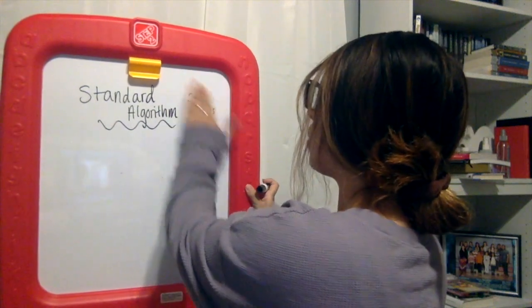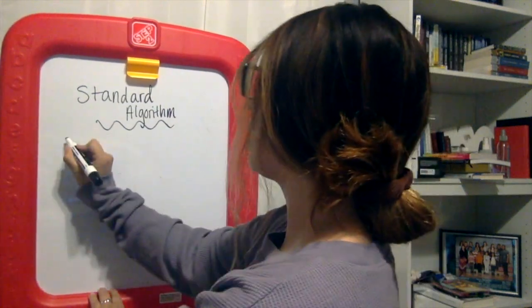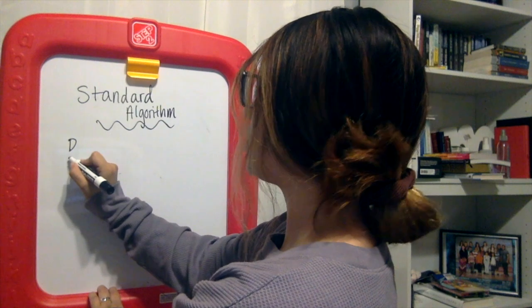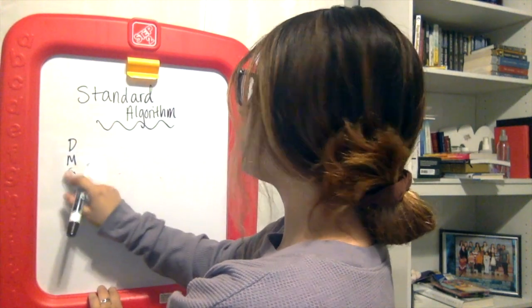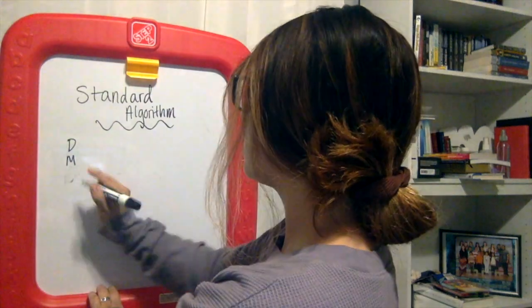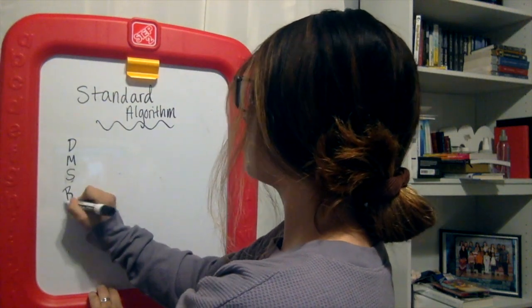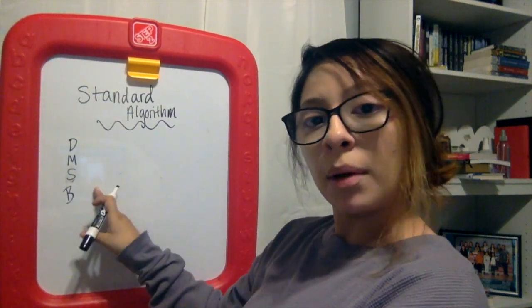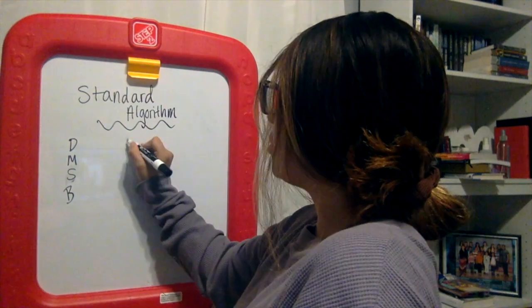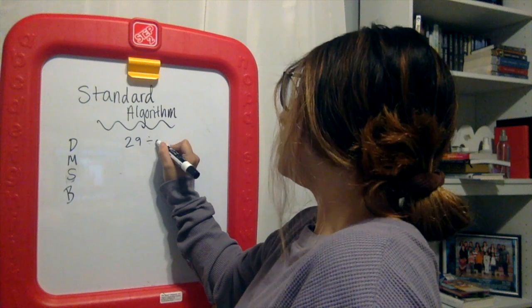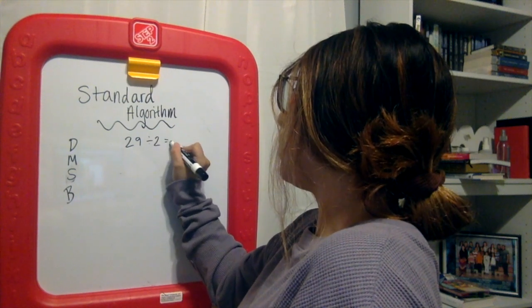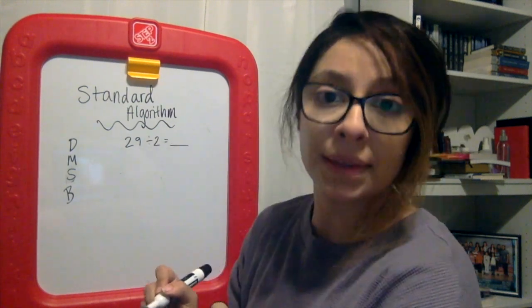So Does McDonald's Sell Burgers? First thing when you have a division problem, make sure you always - sell is first, right? Does McDonald's sell burgers? First thing, always have that on your side. And then let's go ahead and do a two-digit number, like 29 divided by let's say 2 equals blank. And let's set this up correctly.